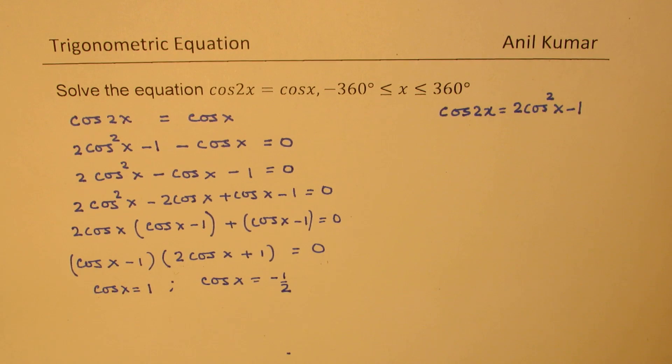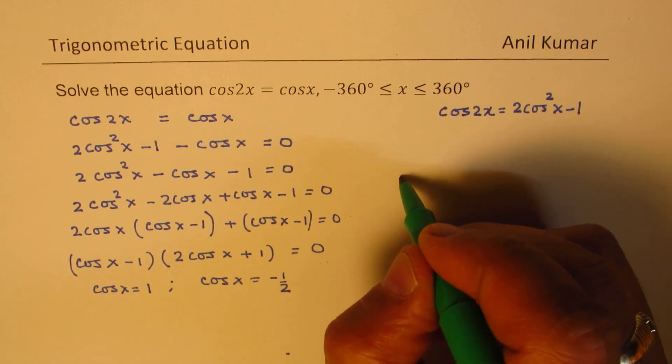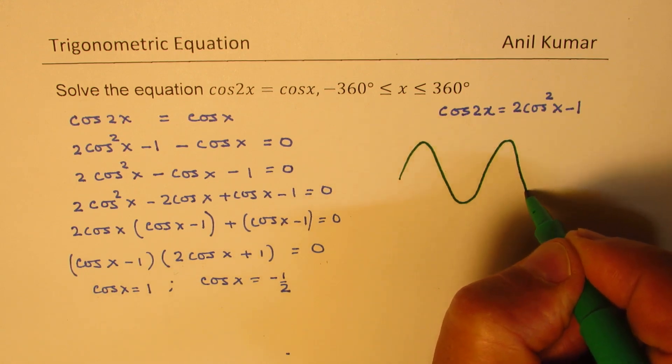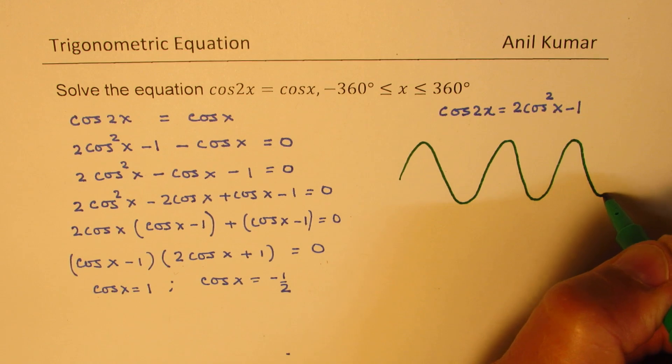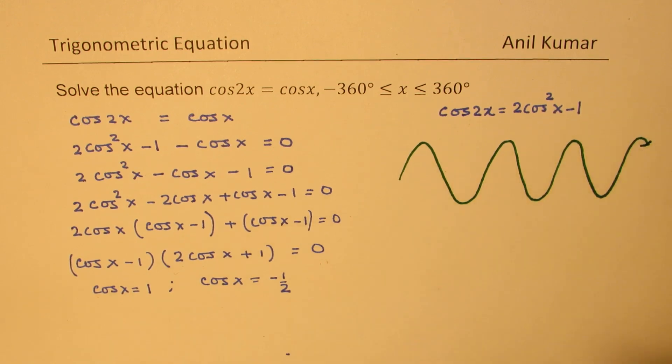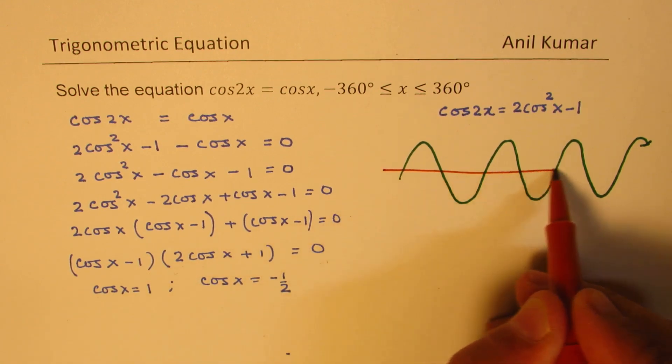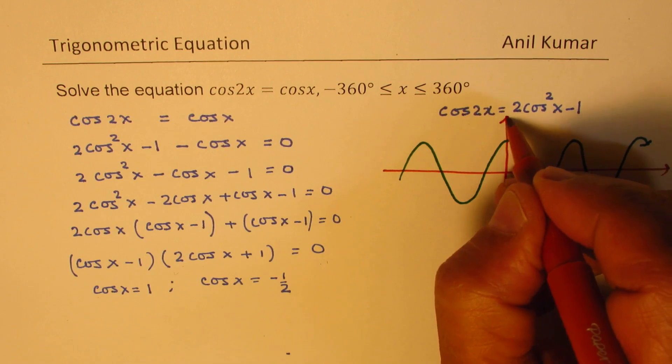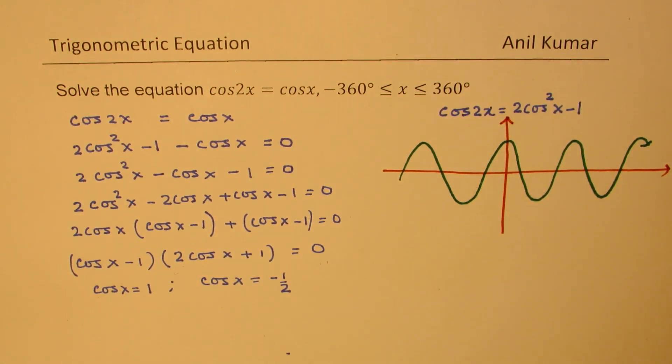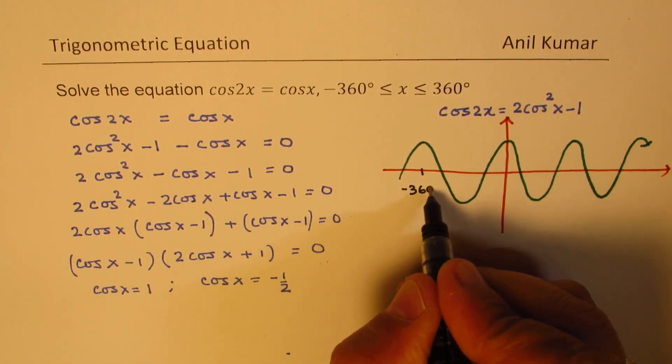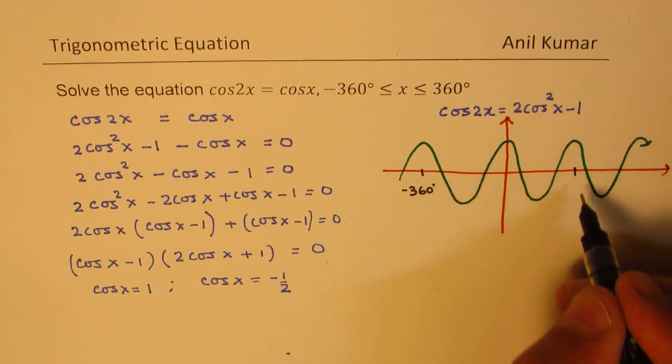Now let's look into the cosine wave and figure out what should be the solutions. So let me just sketch the cosine wave here. Now as you know, the cosine wave starts with the maximum. So we are looking into the domain which is from minus 360 to plus 360. So our domain is from minus 360 degrees to one full cycle which is 360 degrees.